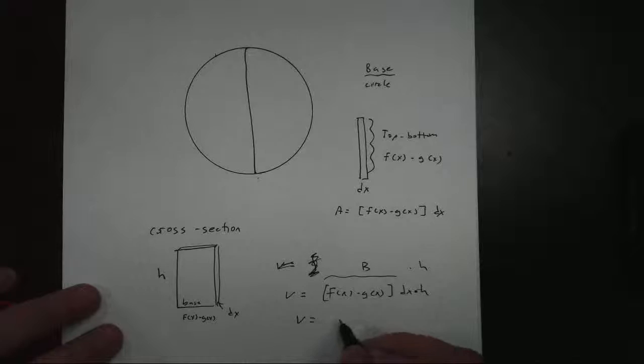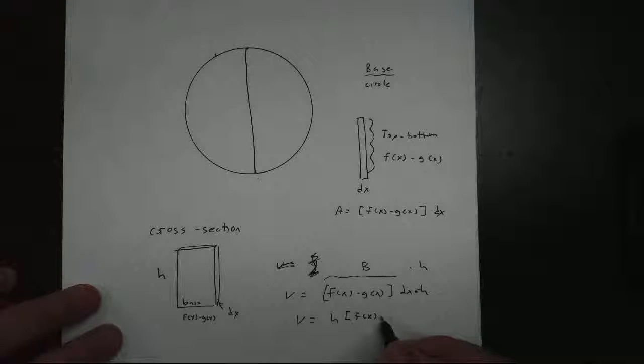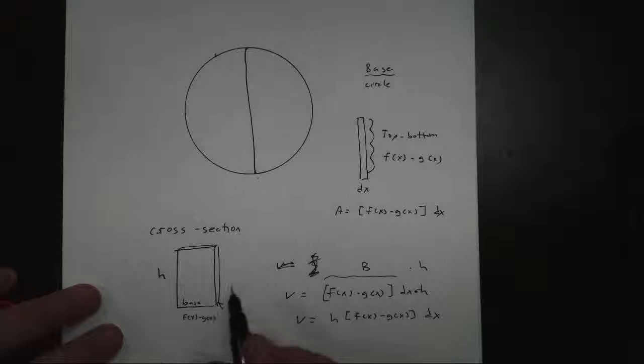So the total volume, if we rewrite this, with the dx at the end, is going to be h times [f(x) - g(x)] dx. h is probably just going to be a number right here, and that's going to give me the volume of my one cross-section.